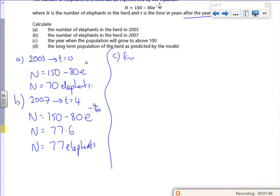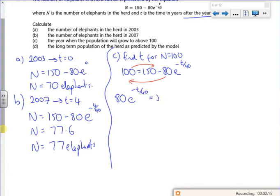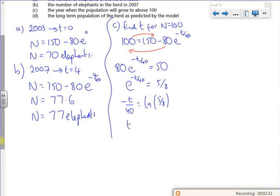C says the year that the population will grow above 100. So I'm going to find t for n is 100. So I've got 100 is 150 minus 80 e to the minus t over 40. If I do a switch, take that over 40 is equal to 50. So if I divide through by 80, I've got 5/8. Take logs of both sides, minus t over 40, log of 5/8. And then multiply by minus 40.